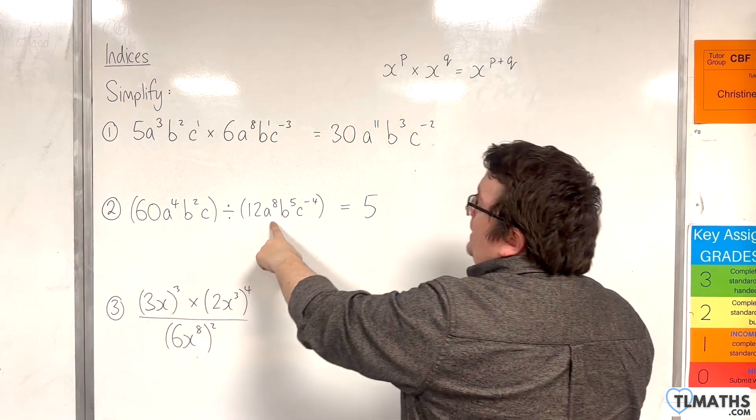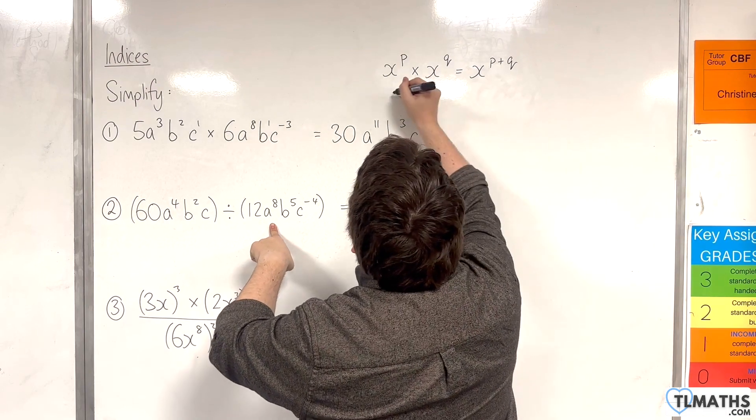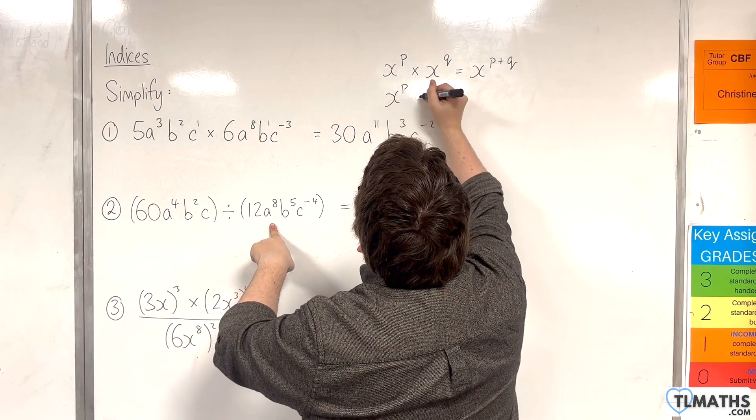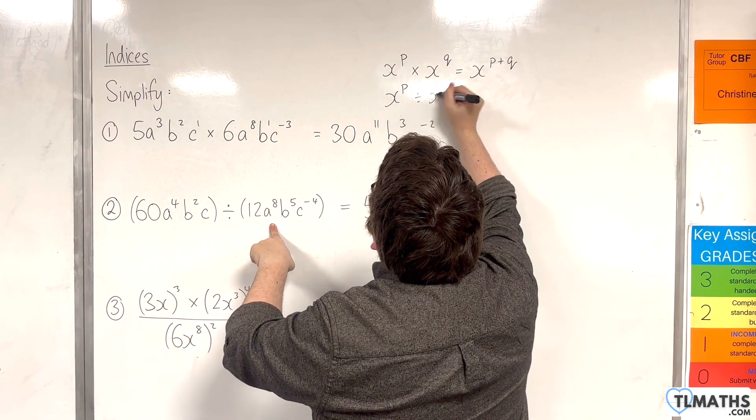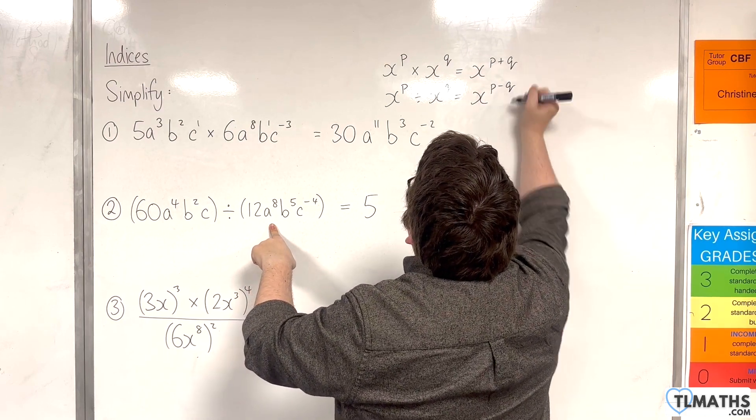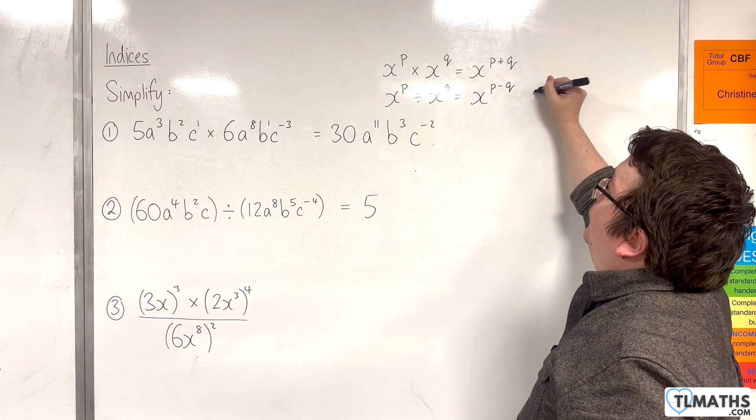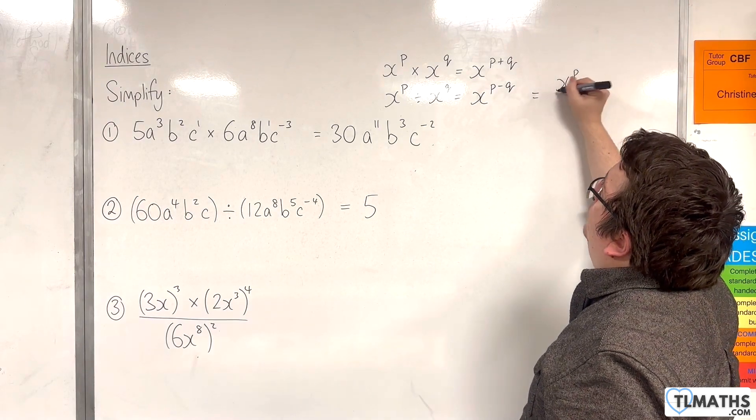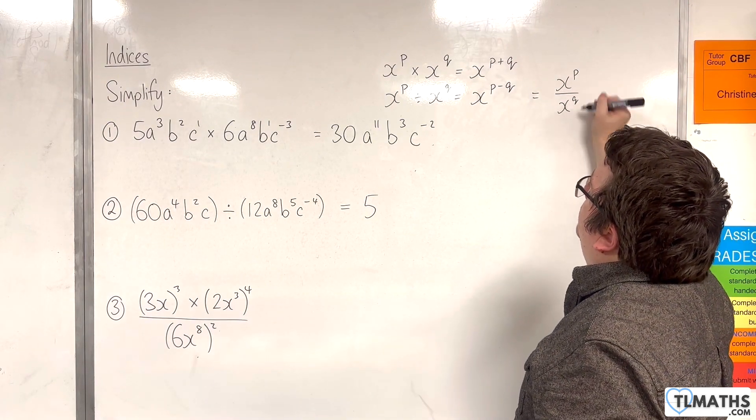a to the power of 4 divided by a to the 8. So for this, we need the index rule of x to the p divided by x to the q is equal to x to the p minus q. Now, that's the same, of course, as x to the p over x to the q. Both the same.